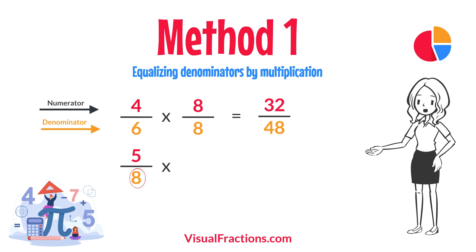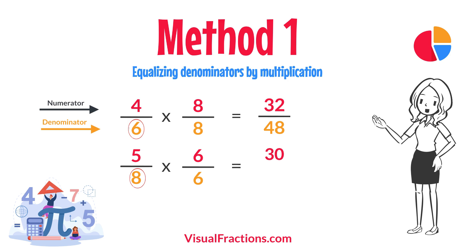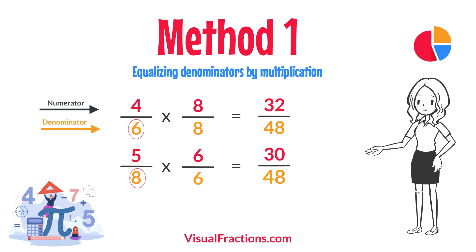For 5 eighths, multiply both the numerator and the denominator by 6, the denominator of 4 sixths. This results in 30 forty-eighths.